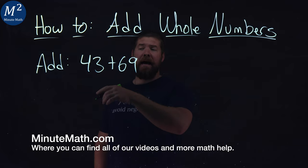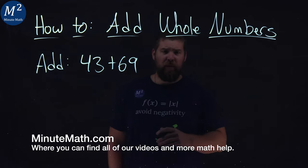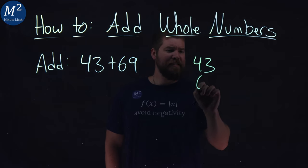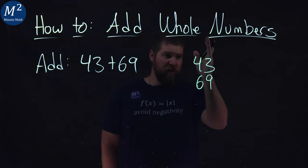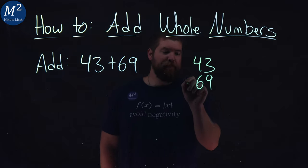We're given this problem here. We need to add 43 and 69. So to do that, we need to write them vertically, 43 and 69 over each other. Make sure our digits line up where the ones place and the tens place are added here.